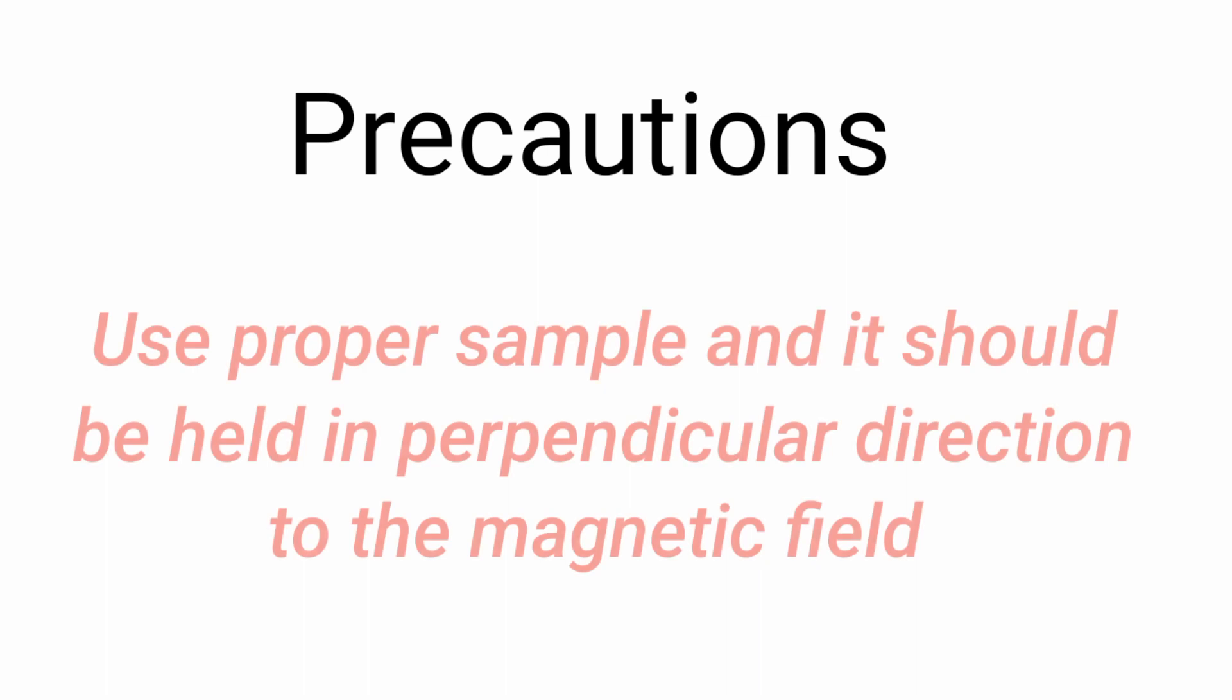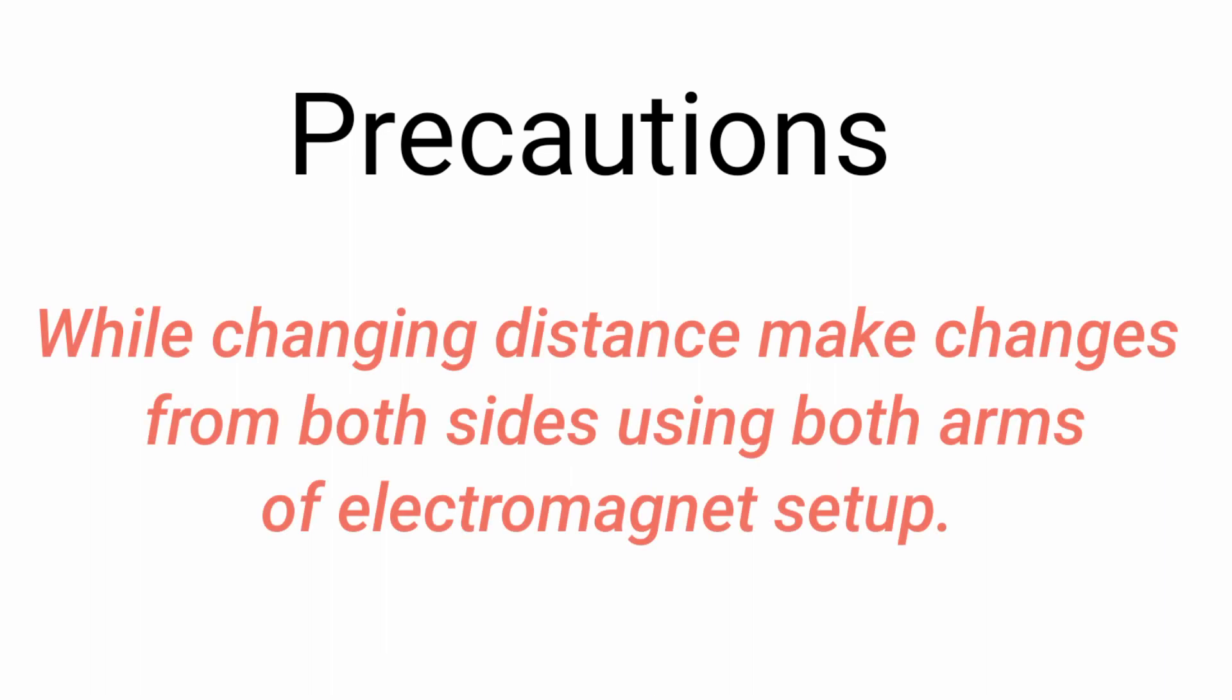Precautions that one needs to take in this experiment: first of all, use proper sample and keep it at a perpendicular direction to the magnetic field. And the second thing is, while making changes in distance, make change from both the sides and not just one.